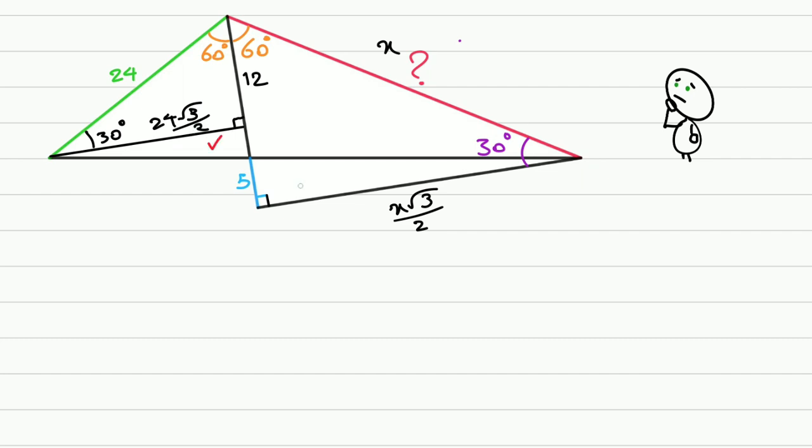Take a look at these two skinny triangles. Both of them are right triangles and they have the same opposite angles, so we can say they're similar.